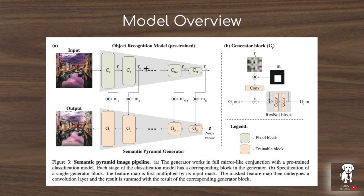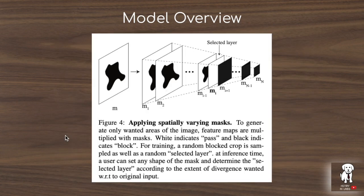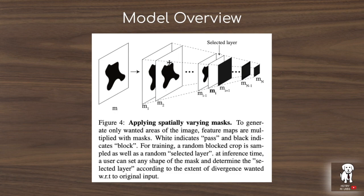Different images are generated depending on which feature maps from the pre-trained image classifier you select — say the second convolutional layer compared to the seventh layer or the first fully connected layer. There are also interesting details in how you apply spatially varying masks to the intermediate features when taking them from the pre-trained classification network and embedding them in the generator's intermediate features. You might have a blob-shaped mask that zeros out certain features in the pre-trained network, only passing information outside the masked region, allowing further control and diversity in generated images.